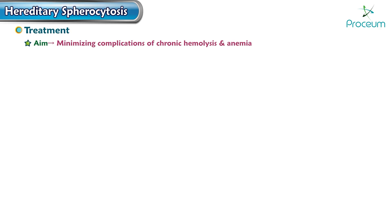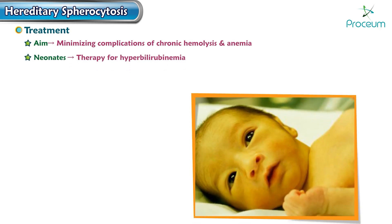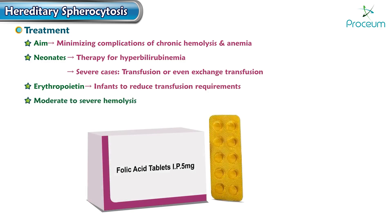Regarding treatment, the aim is to minimize the complications of chronic hemolysis and anemia. Neonates may require therapy for hyperbilirubinemia, and in severe cases, transfusion or even exchange transfusion may be required. Erythropoietin may be used in some infants to reduce transfusion requirements.